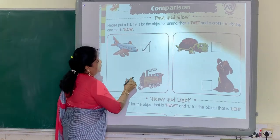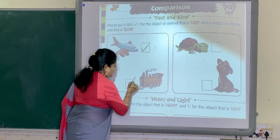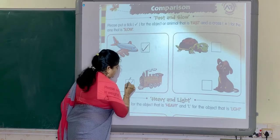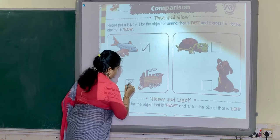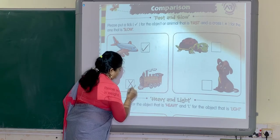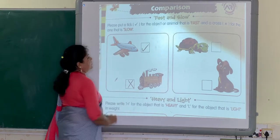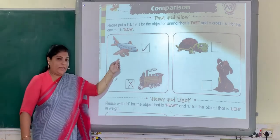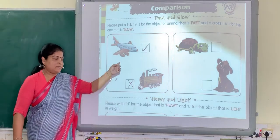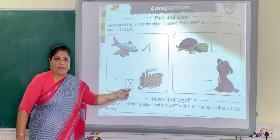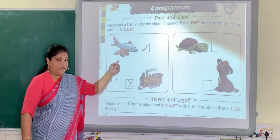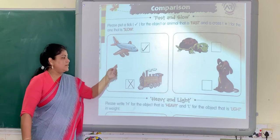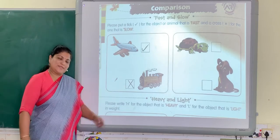Teacher is going to put a cross here. Aeroplane is fast. Train is slow. Aeroplane is fast. Train is slow.